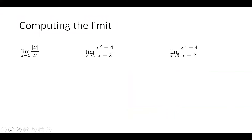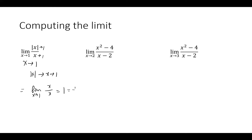Let's look at how to compute these limits with some exercises. In the first case, when x approaches one, we're taking the absolute value. Since we're approaching one from positive values, the absolute value of x is just x, which approaches one. So the limit is one over one, which equals one. The second case requires more caution — we look at the denominator, which is x minus two. If x approaches two, then the denominator approaches zero, and we need to pay extra attention when dividing by something approaching zero.